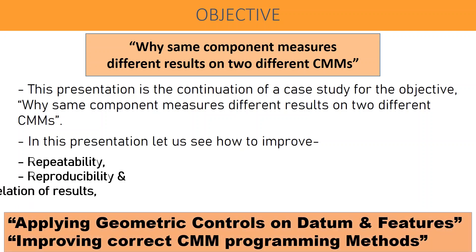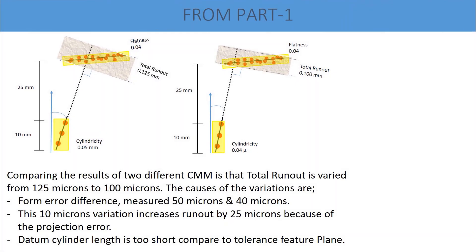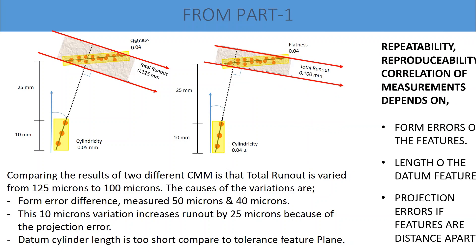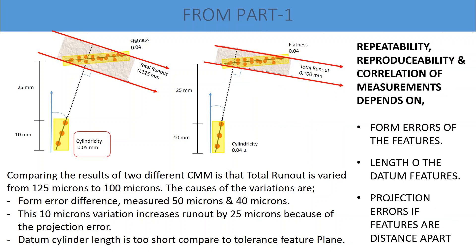This can be achieved by applying geometric controls on datum and features, improving correct CMM programming methods. From the last video of Part 1, repeatability, reproducibility, and correlation of measurements depends on form errors of the features, length of the datum features, and projection errors if features are distance apart.